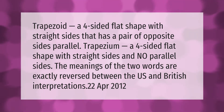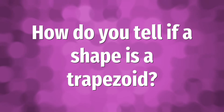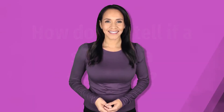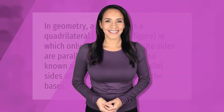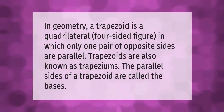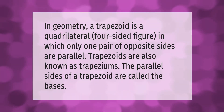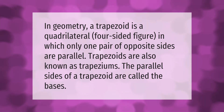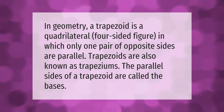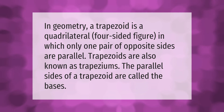In geometry, a trapezoid is a quadrilateral — a four-sided figure — in which only one pair of opposite sides are parallel. Trapezoids are also known as trapeziums. The parallel sides of a trapezoid are called the bases.